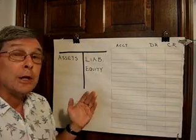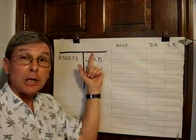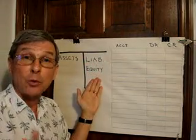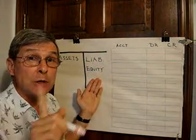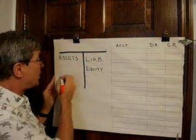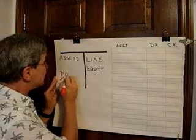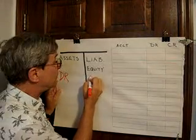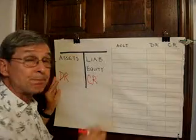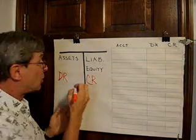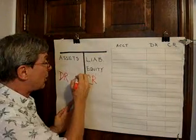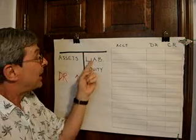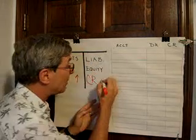You'll recall that it originated with a balance sheet like this — assets on the left, liabilities and equity on the right. Originally we said that the things on the left-hand side would be defined as debits, and the things on the right-hand side would be defined as credits. Furthermore, when assets go up, that will be a debit. When liabilities and equity go up, that will be a credit.